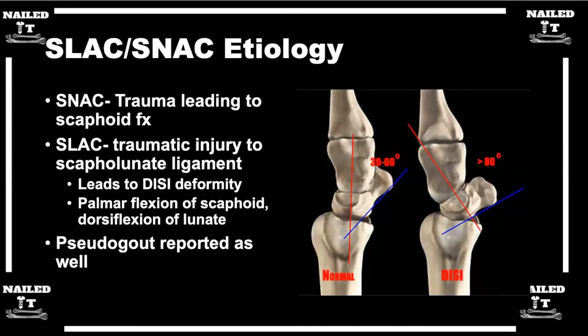Then you have the triquetrum, which is the opposite — its whole goal is to extend. And then you have the lunate in the middle, and it's bound to each of its neighbors. So when the scaphoid is trying to flex and the triquetrum is trying to extend, the lunate is held in a relatively neutral position because it's equal. Now, if you injure one of these ligaments — say the SL — the lunate is untethered from the scaphoid. The only acting force on that lunate is the triquetrum extending. You can see that the axis of the lunate is actually pointing dorsally or tipping dorsally, and that causes the capitate and lunate to start getting increased contact pressure on the edges and arthritis.